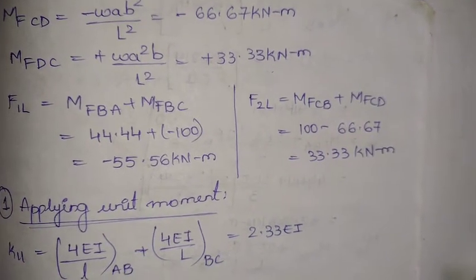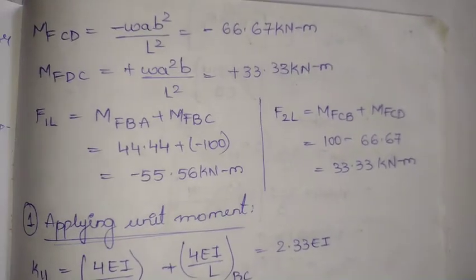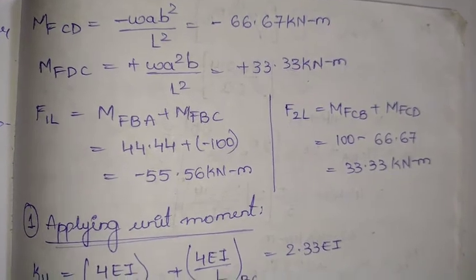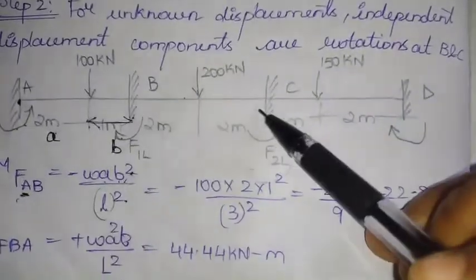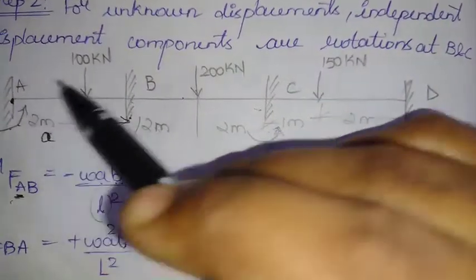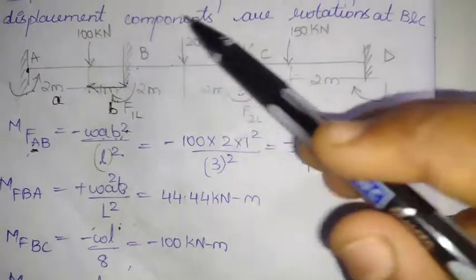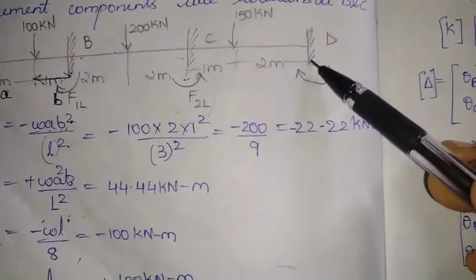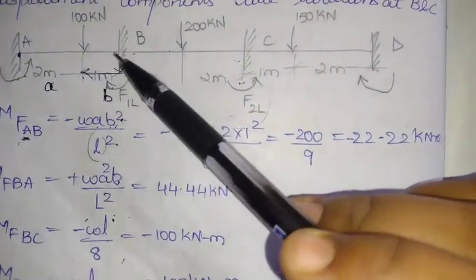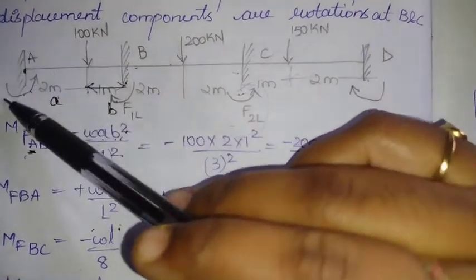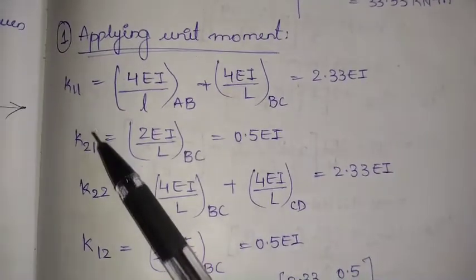F1L is the resultant reaction moment at joint B, calculated as MfBA plus MfBC. Since B lies between spans AB and BC, we take both. Similarly, F2L equals MfCB plus MfCD for joint C. Note that the left-hand support moment is negative (anti-clockwise) and the right-hand support moment is positive (clockwise). We now apply unit moment at coordinates one and two to calculate the stiffness elements.